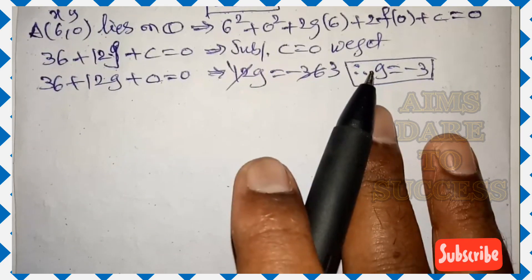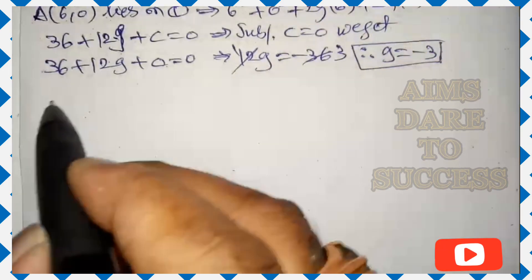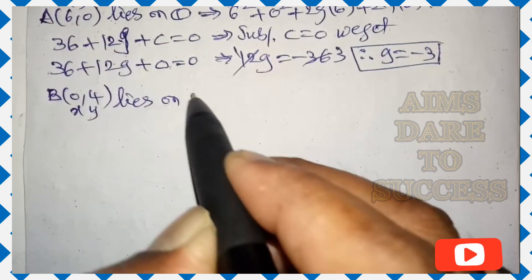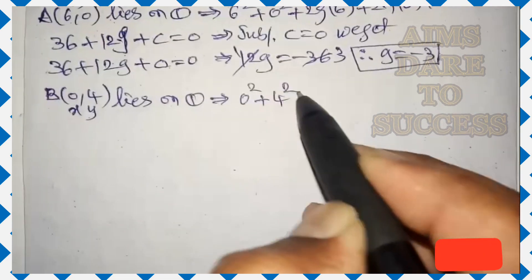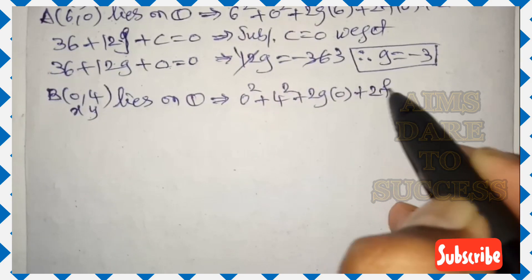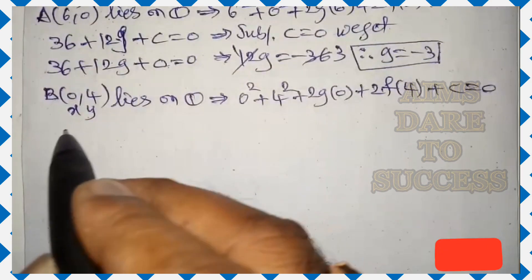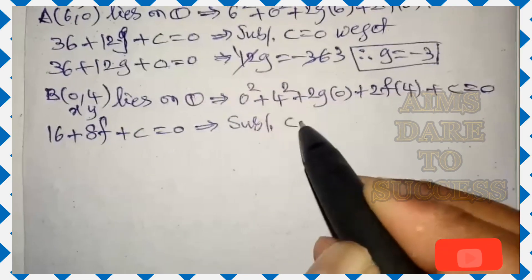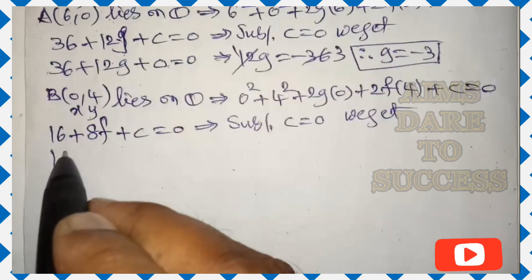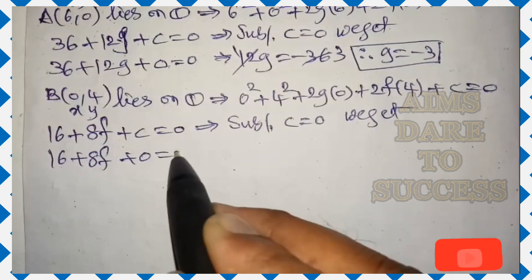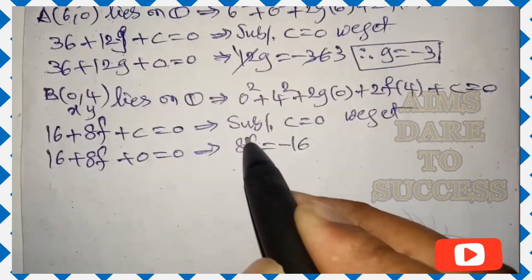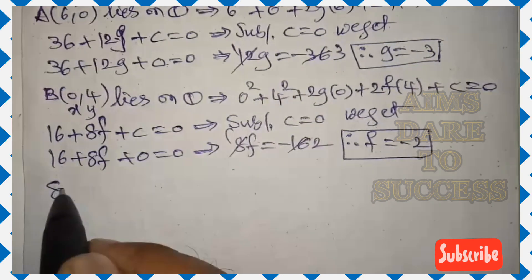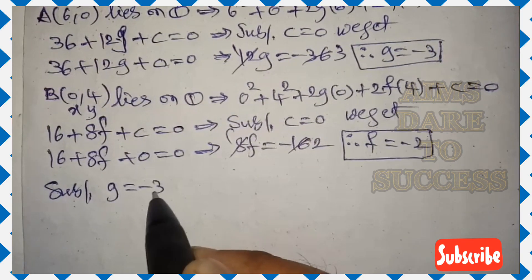Third point: (0, 4) lies on equation 1. x = 0, y = 4. We get 0² + 4² + 2g(0) + 2f(4) + c = 0, which gives 16 + 8f + c = 0. Substituting c = 0, we get 16 + 8f = 0, so 8f = −16. Therefore f = −2.